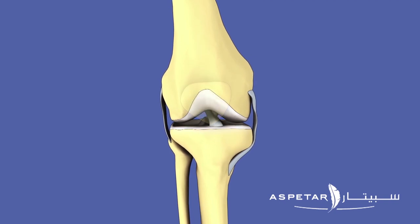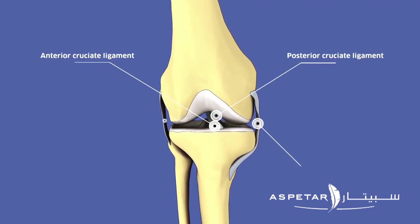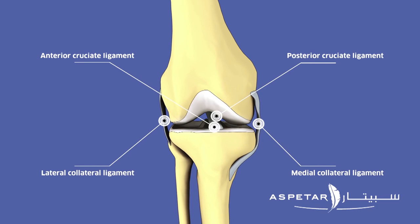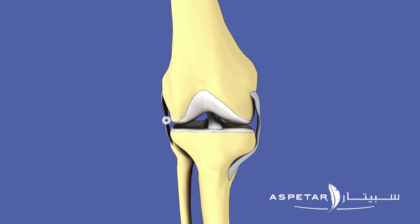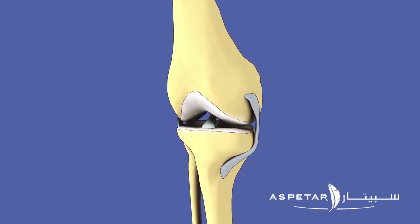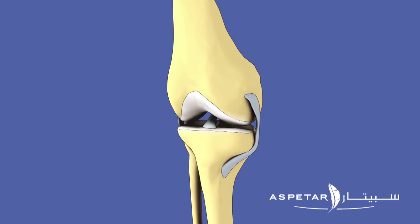ACL reconstruction aims to repair the ACL and its function by using a tendon to substitute the lost tissue inside the knee. Together with the patient, we discuss the correct tendon option. Many of these patients want to return to pivoting sports, and to provide rotational stability during pivoting maneuvers, we very often associate the reconstruction on the lateral side — called the monoloop of the lateral tenodesis.